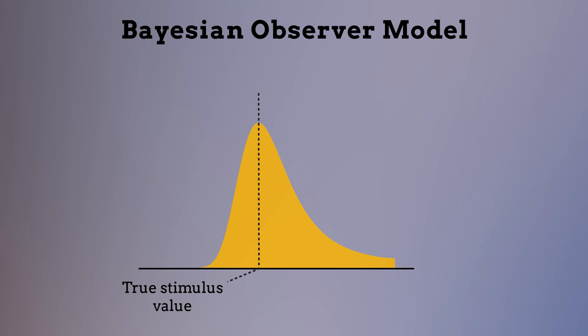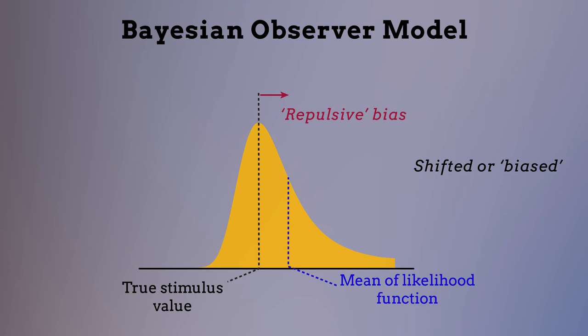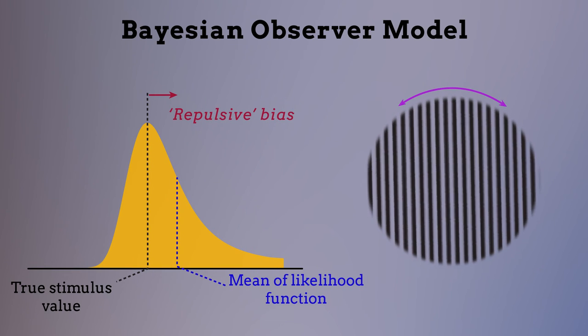The first was that perception can be shifted, or biased, away from an observer's expectations. This type of repulsive bias contrasts with the predictions of traditional Bayesian models, but it accurately captures the perceptual biases of human observers asked to make simple judgments about visual stimuli, such as the orientation of lines and the spacing between them.